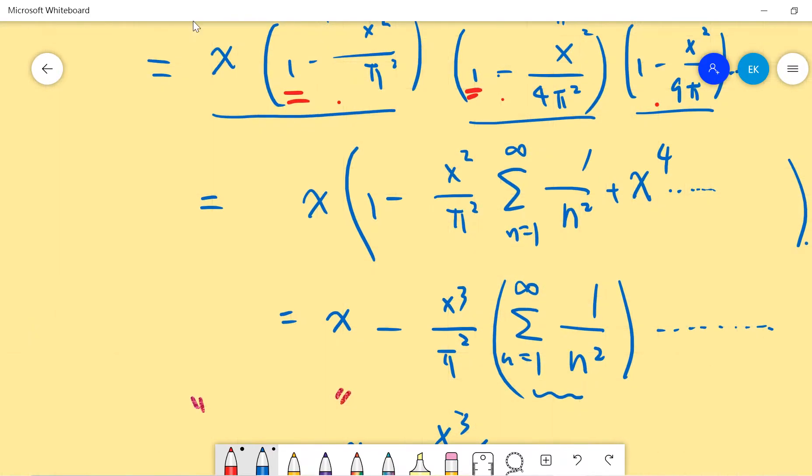And the second term should be the x² term, right? x² over π² and there is 1², 2², 4² squared, 9². So you get this. And so you multiply it, multiply x into this. You get x minus x³ divided by π² and the coefficient, what we want.